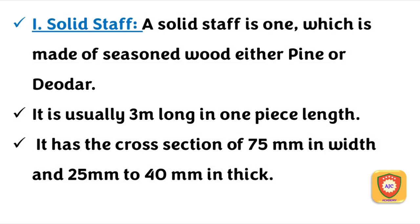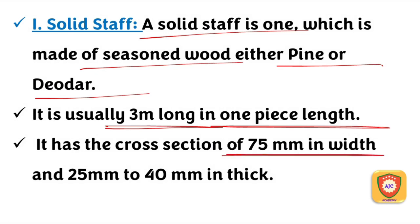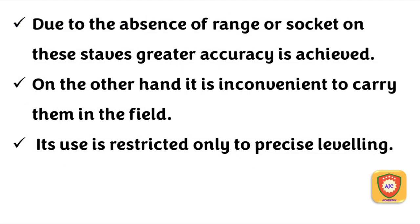The solid staff is made of well-seasoned wood such as pine or deodar. It is a single piece of 3 m length, with a width of 75 mm.